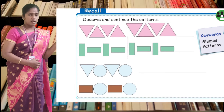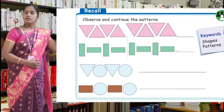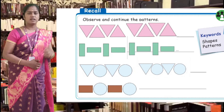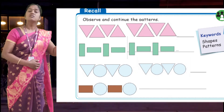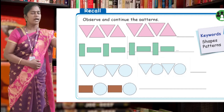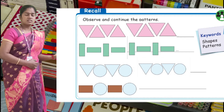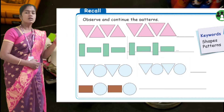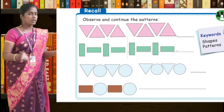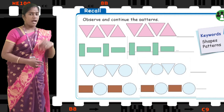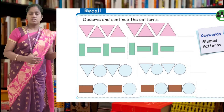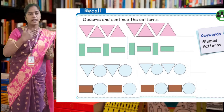Next: a triangle and a circle — triangle, circle — what comes next? Triangle. Very good — after that circle. Like that you can draw and continue the pattern. Next example: a rectangle, circle, rectangle, circle — what comes next? A rectangle, and then a circle. Very good — like that you can draw the pattern and continue.